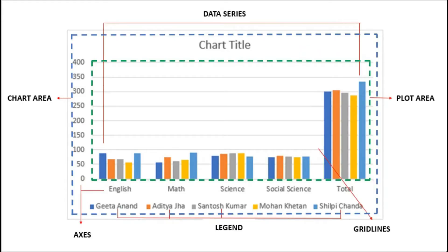In this video we will learn the various components of a chart. Starting with the first one, a chart always has a chart title that is displayed at the top — it shows or displays the title of the chart. Next is the data series, which are the actual representation of data.